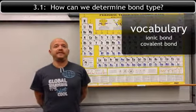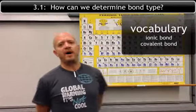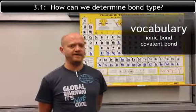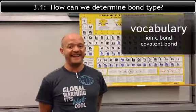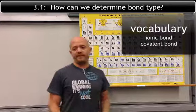Hey, today I'm going to talk to you a little bit about different types of bonds. We have two major types of bonds that we're going to talk about today: ionic bonds and covalent bonds.